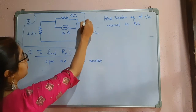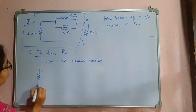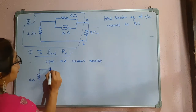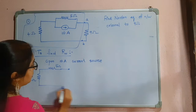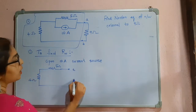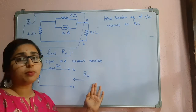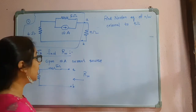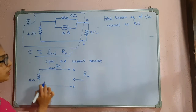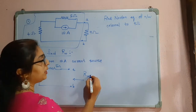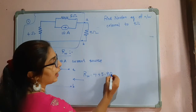I will mark these terminals as A and B. So this is 4 ohm and here we have 5 ohm, and these are the terminals A and B. I have to find the equivalent resistance from this terminal. This is 4 ohm and this is 5 ohm — these both are in series. So Rn will be equal to 4 plus 5, that is equal to 9 ohm.